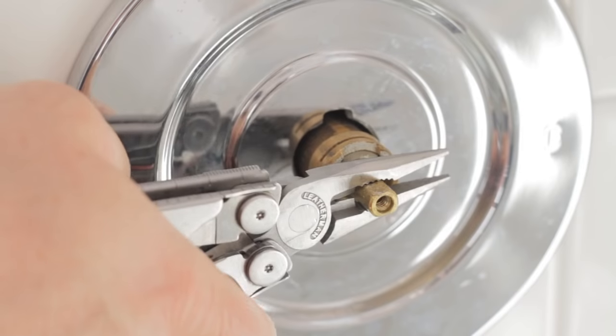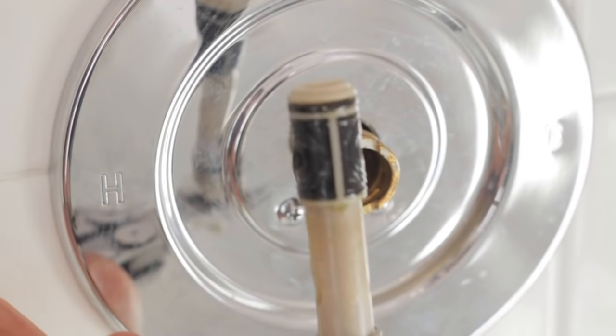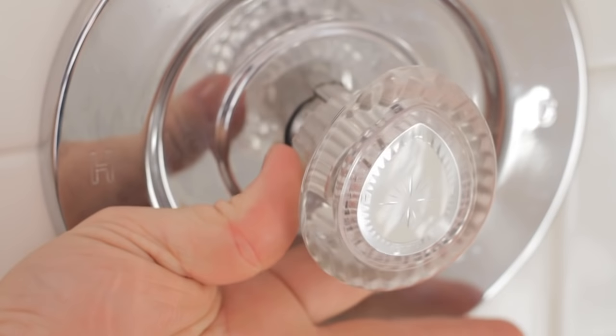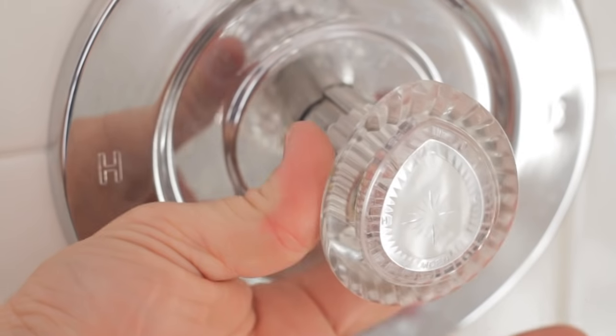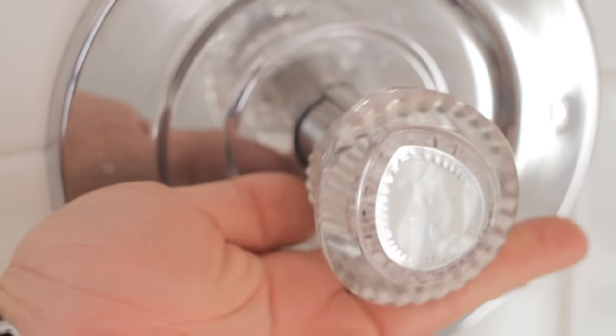I'm Terry with Towers Murray Plumbing, here to show you how to repair a push-pull shower faucet. When repairing a push-pull shower faucet, which means you pull out to turn on, right and left for hot and cold, first thing you want to do is remove your index button.